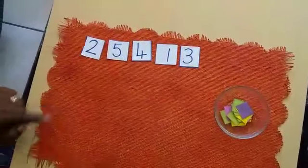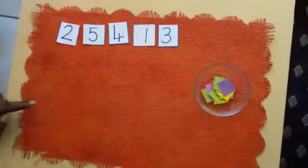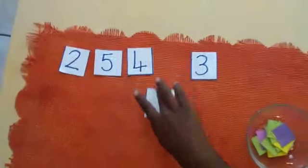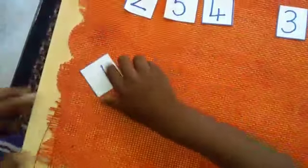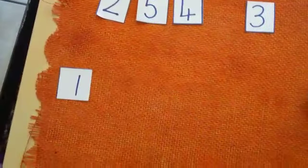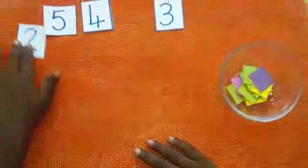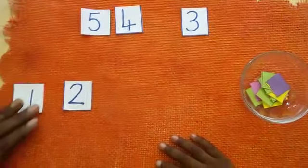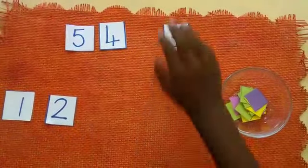First, the first number we have, number 1. So take 1 and put it here for me please. There we go. And then, what comes after 1? 2. Good. And what comes after 2? 3.